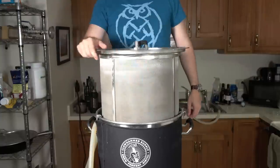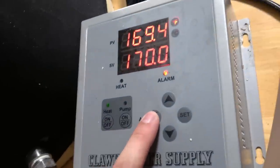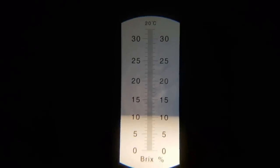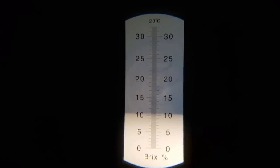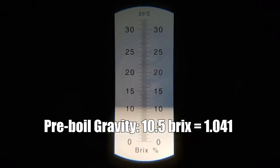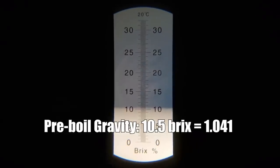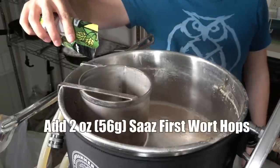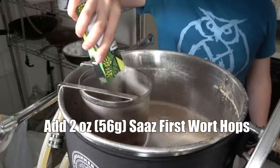However, as soon as I did that, I fired up the controller to 100% power to get a jump start on the boil. I pulled a sample of wort for the pre-boil gravity reading, and I saw a measurement of 10.5 brix or 1.041, which was three points lower than the target pre-boil gravity, but not too bad. As soon as I removed the grain basket, I added my first wort hops, which was two ounces of Saaz.